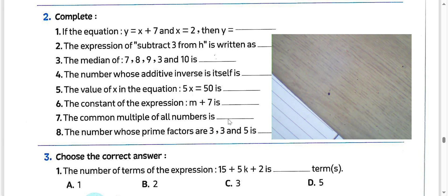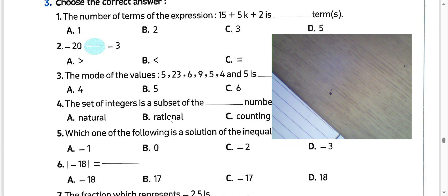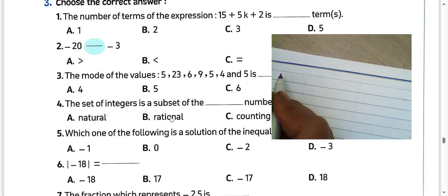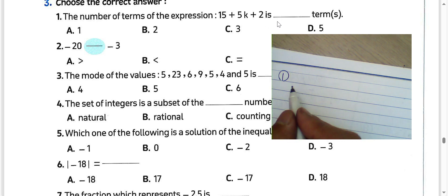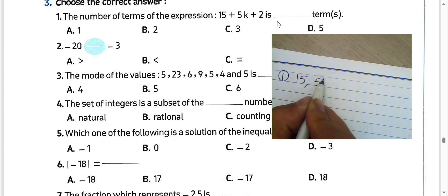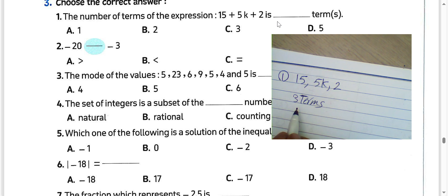Choose the correct answer. Number 1: the number of terms in the expression 15 plus 5k plus 2. We have 3 terms here: the first term is 15, then 5k, then 2. We have 3 terms.